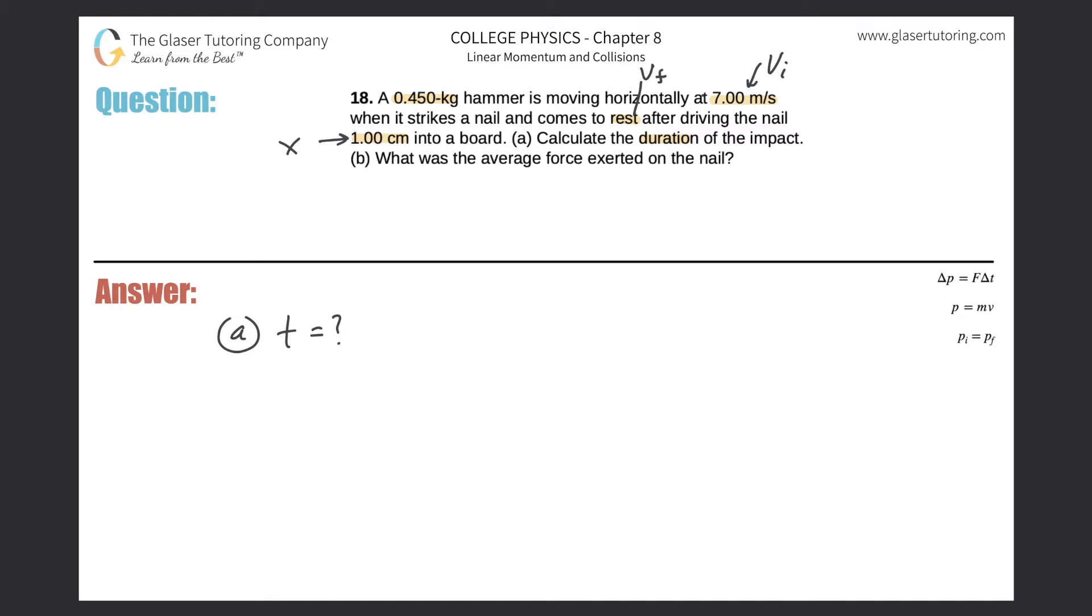Initial velocity here is 7.00 meters per second. It was traveling horizontally. I'm assuming it's traveling to the right horizontally. The final velocity of the hammer was zero, and the displacement is going to be 1 centimeter. Convert that to meters by moving the decimal two places to the left or dividing by 100, so it's 0.01 meters.